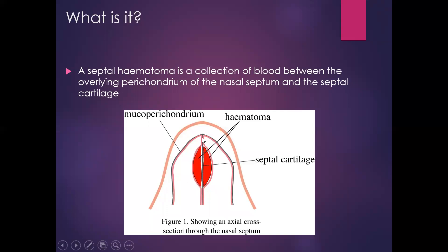In terms of what it is, septal haematoma as the name suggests is a collection of blood between the overlying mucoperichondrium and the underlying septal cartilage. The septal cartilage gains its blood supply from the overlying mucoperichondrium, so if this lining is disrupted and a haematoma gets in the way, the blood supply to the septum is compromised. Ischaemia will shortly follow, and then ultimately necrosis of the septal cartilage.